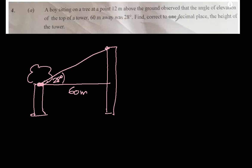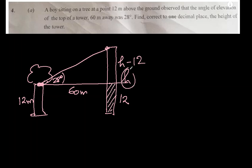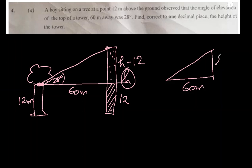Find to one decimal place the height of the tower. Let's say this is h. He is sitting 12 meters above ground, so there's already 12 accounted for — meaning this portion is 12 and the remaining part is h minus 12. Since 12 are taken out of h, what we want to find is h minus 12. We have 60 meters horizontally and h minus 12 vertically.